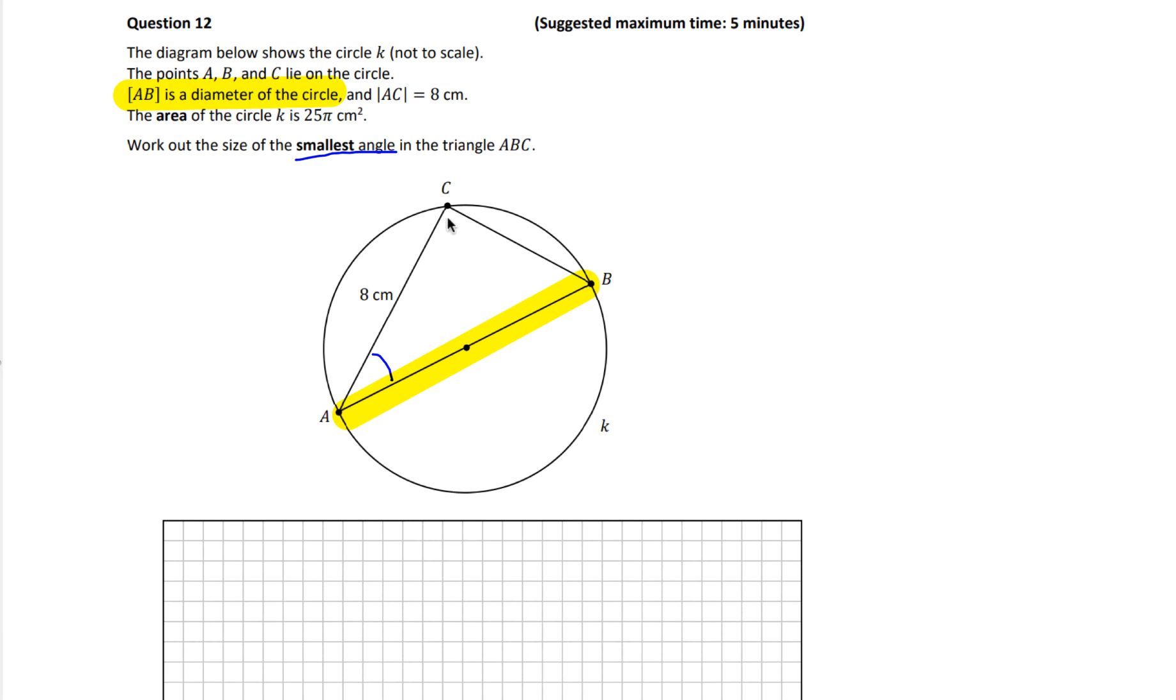Well, that always creates a 90-degree angle. So this angle here is 90 degrees. That's just an angle fact you should know. It's a circle theorem. So we know this is 90 degrees. So that helps because we now have a right-angled triangle here. Okay, now what's the other bit of information we have?